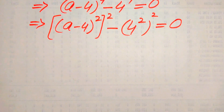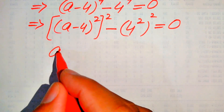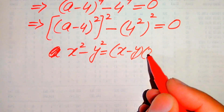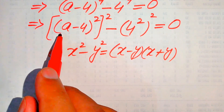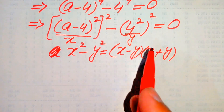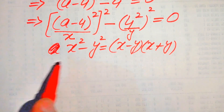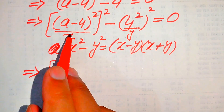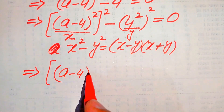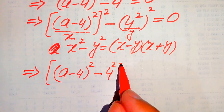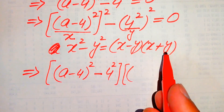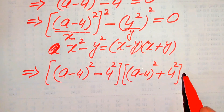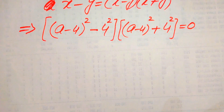In the next step we apply the algebraic formula x² - y² = (x - y)(x + y). Here x is (a-4)² and y is 4². Substituting these into the formula, we get [(a-4)² - 4²][(a-4)² + 4²] = 0.